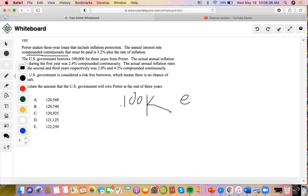The actual inflation during the first year was 2.4%, actual inflation rates for the second and third years are 2.8% and 4.2%, compounded continuously. Calculate the amount that the U.S. government will owe Porter at the end of three years.